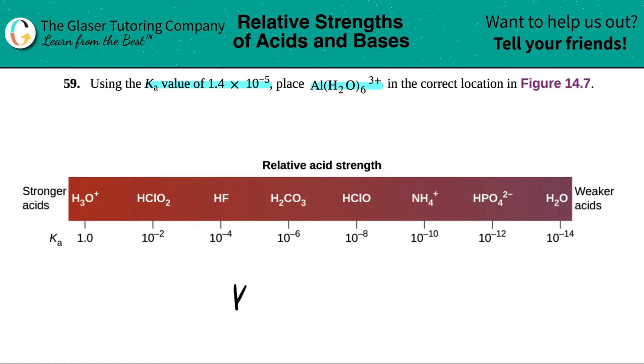In this case, the Ka value that we're working with here is 1.4 times 10 to the negative 5th. Now, if you noticed, there's no numbers that's before the times 10 to the, right?